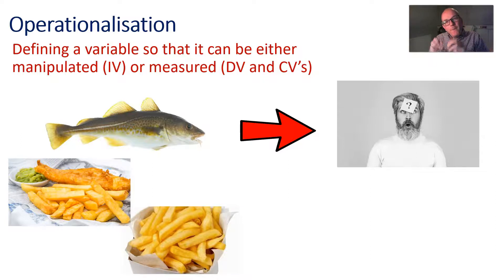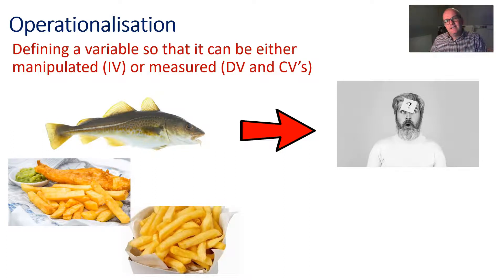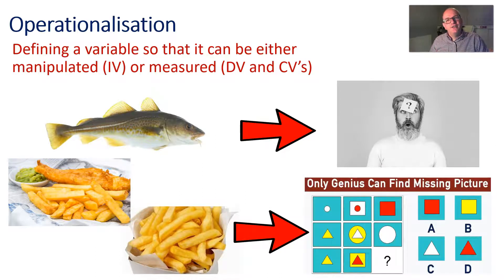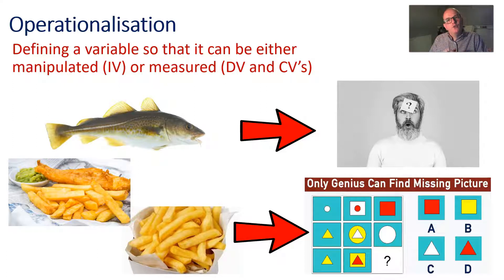So I've operationalized my independent variable - instead of just saying 'I need fish,' I've made it specific: eating fish and chips or just eating chips, which creates my two groups. I also need to think about how to measure intelligence. One way is through an IQ test - a test of problem solving that doesn't require prior knowledge, which produces an IQ score. There's an example of one of the questions shown, and the answer, by the way, is A.